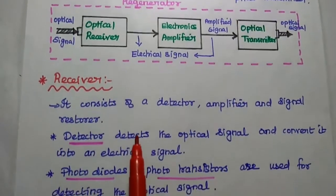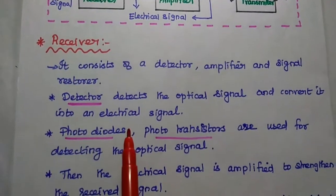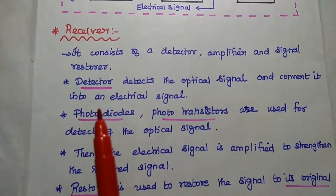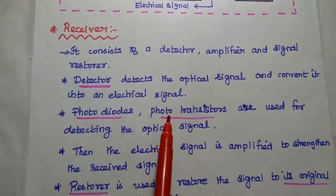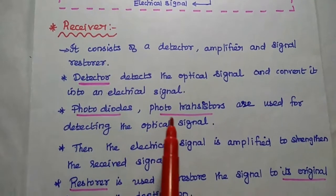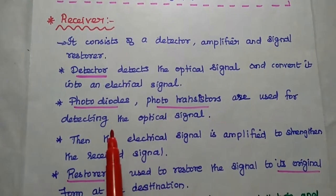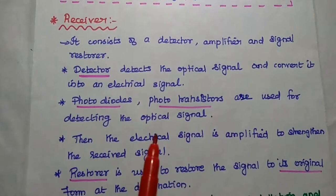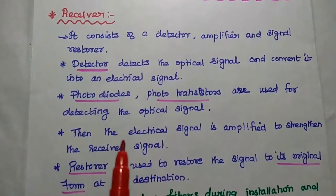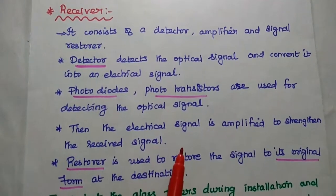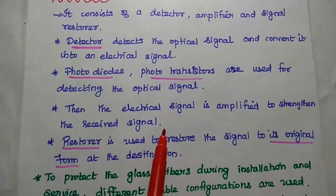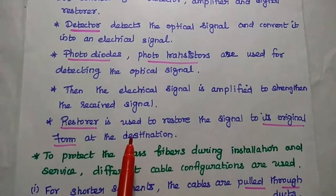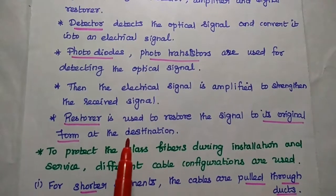Finally, we have the receiver, which consists of the photodetector, amplifier, and restorer. The detector detects the optical signal and converts it into an electrical signal. Photodiodes, phototransistors, and photoconductors are used as photodetectors. The electrical signal is amplified to strengthen the received signal, and finally the restorer is used to restore the signal to its original form.